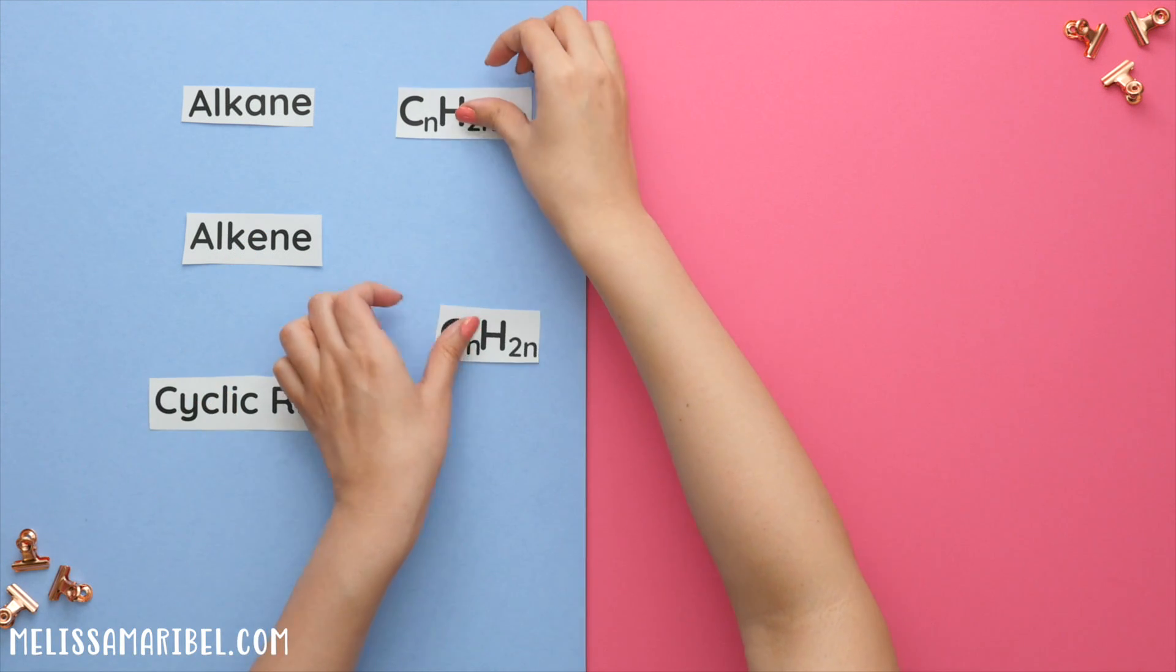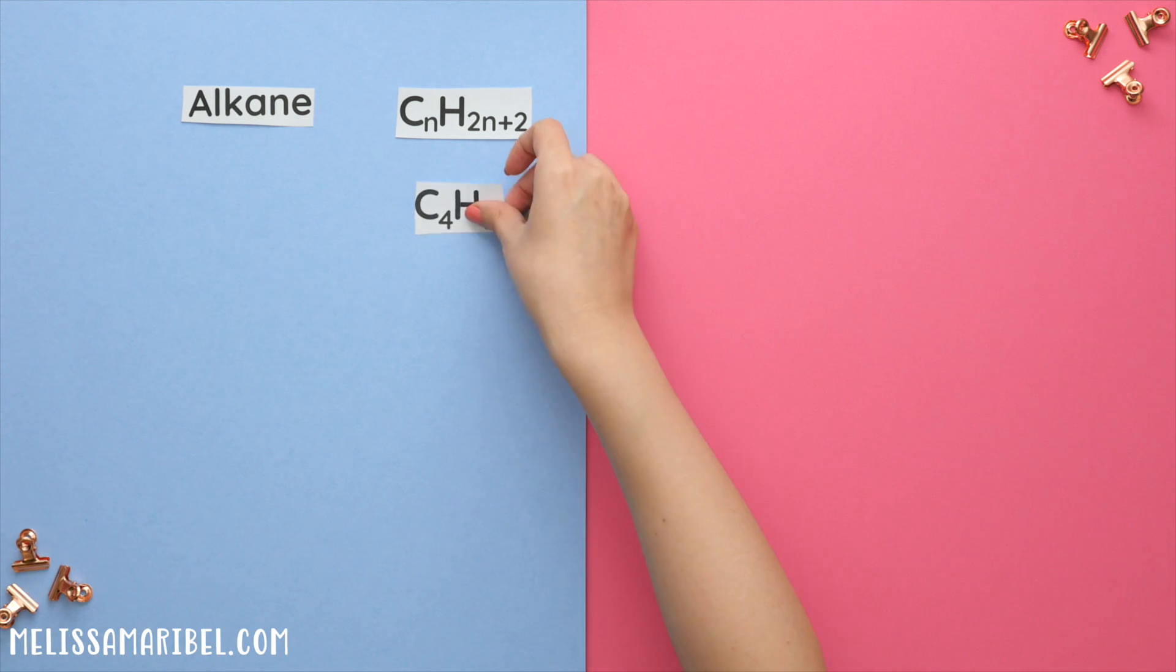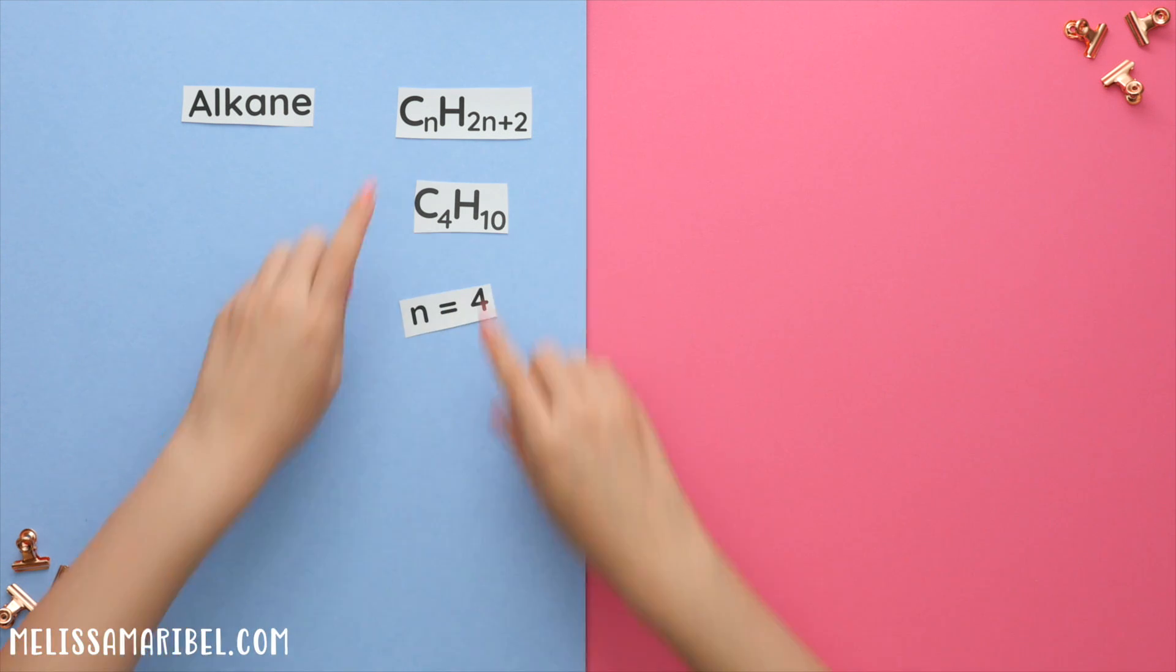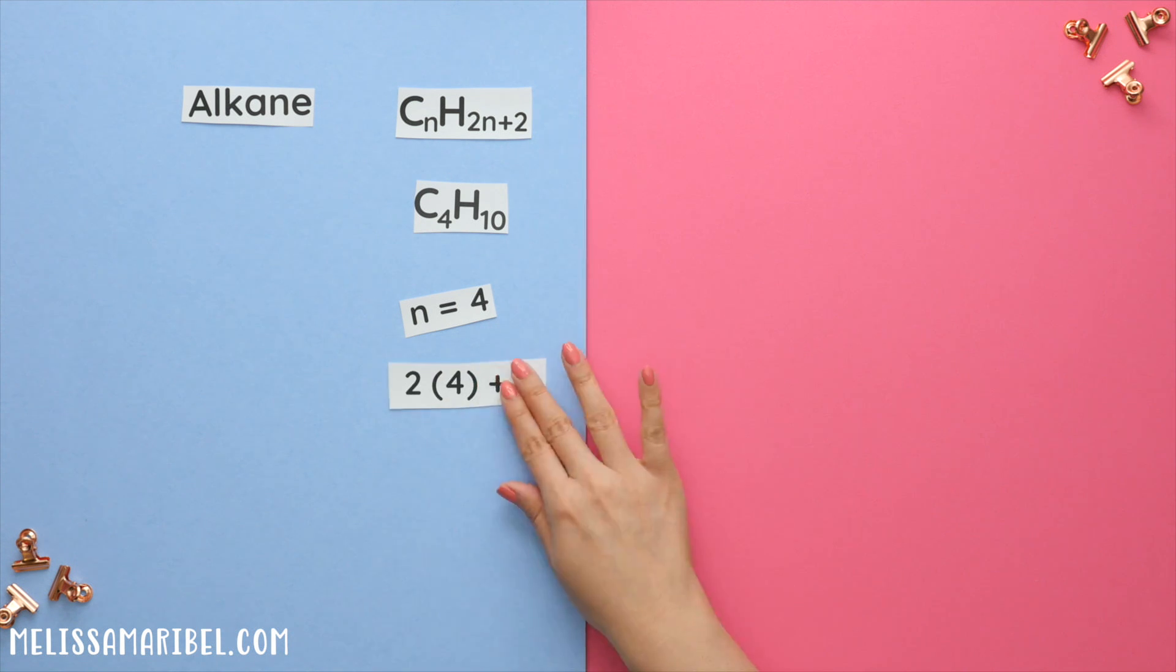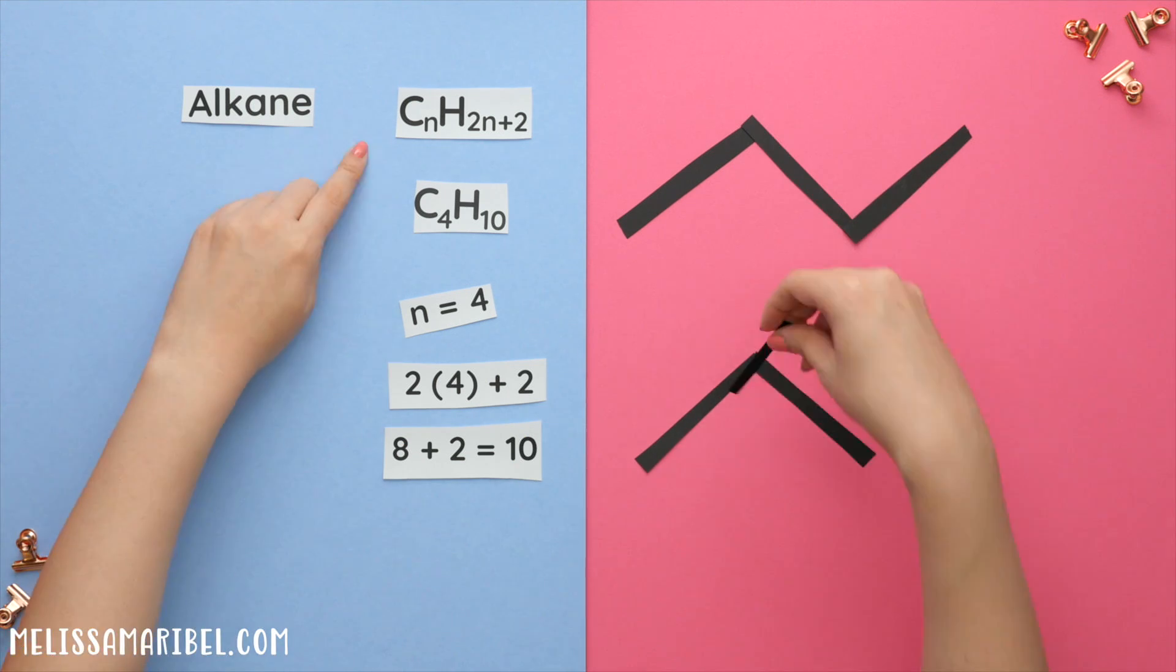These two formulas will help you determine which type of structure you will draw. An alkane has this formula. In the previous example, we had C4H10, where n is equal to 4. We'll plug n into the formula of 2n plus 2. So multiply 2 times 4 to get 8, plus 2 is 10. So this is how we knew it was an alkane, meaning everything had a single bond.